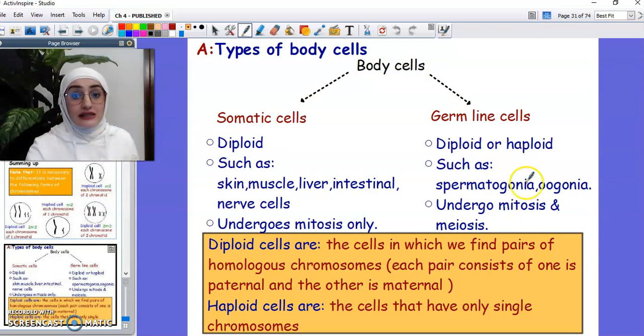Whereas the germline cells, they could be diploid or haploid, such as the sperm cells and the ovum cells, known as spermatogonia or oogonia in grade 12 and 11. They undergo mitosis and meiosis. This is what characterizes them, the meiosis. Later on we're going to stress on what mitosis is and what meiosis is. The diploid cells are the cells in which we find pairs of homologous chromosomes. Each pair consists of one that is maternal and one that is paternal. Whereas the haploid cells are the cells that only have one single chromosome, as we said before.